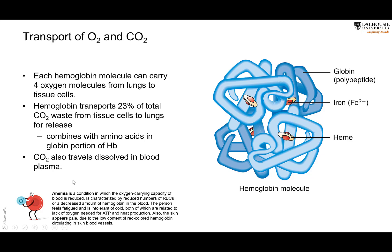Anemia is a reduction of the oxygen-binding capacity of the blood due to reduced RBCs or reduced hemoglobin, so oxygen does not reach the tissues as efficiently. The patient becomes easily tired, has intolerance to cold weather, and if hemoglobin is reduced, the skin and mucous membranes become pale.